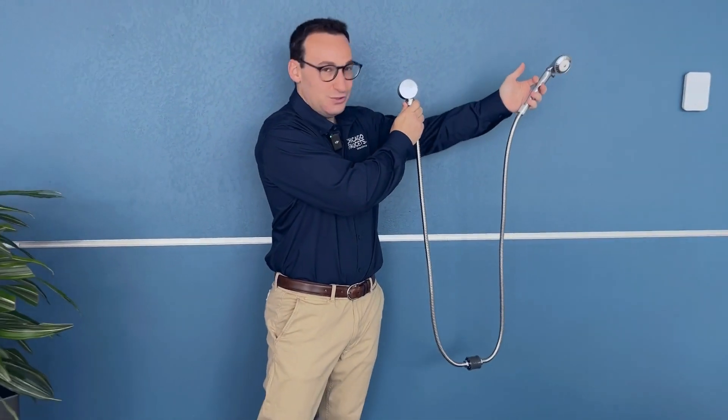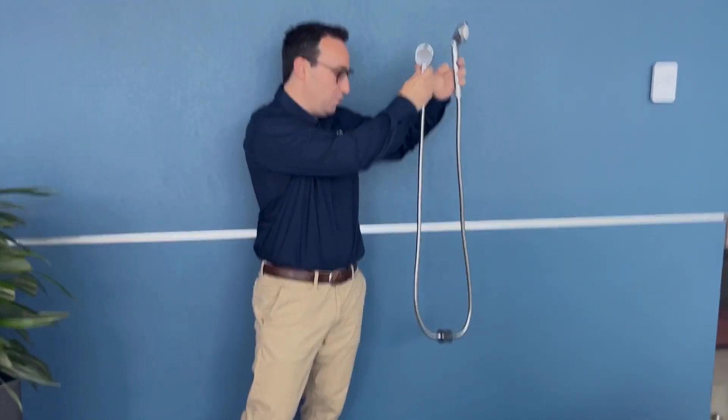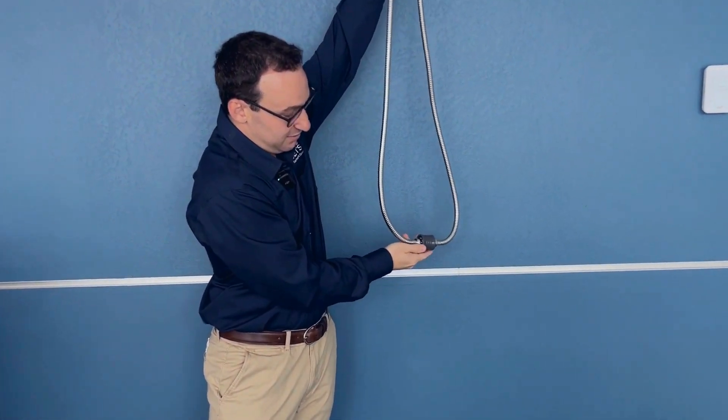So from the elbow to the hand spray, this is going to work just like any other shower hose. What makes it different is this drain.